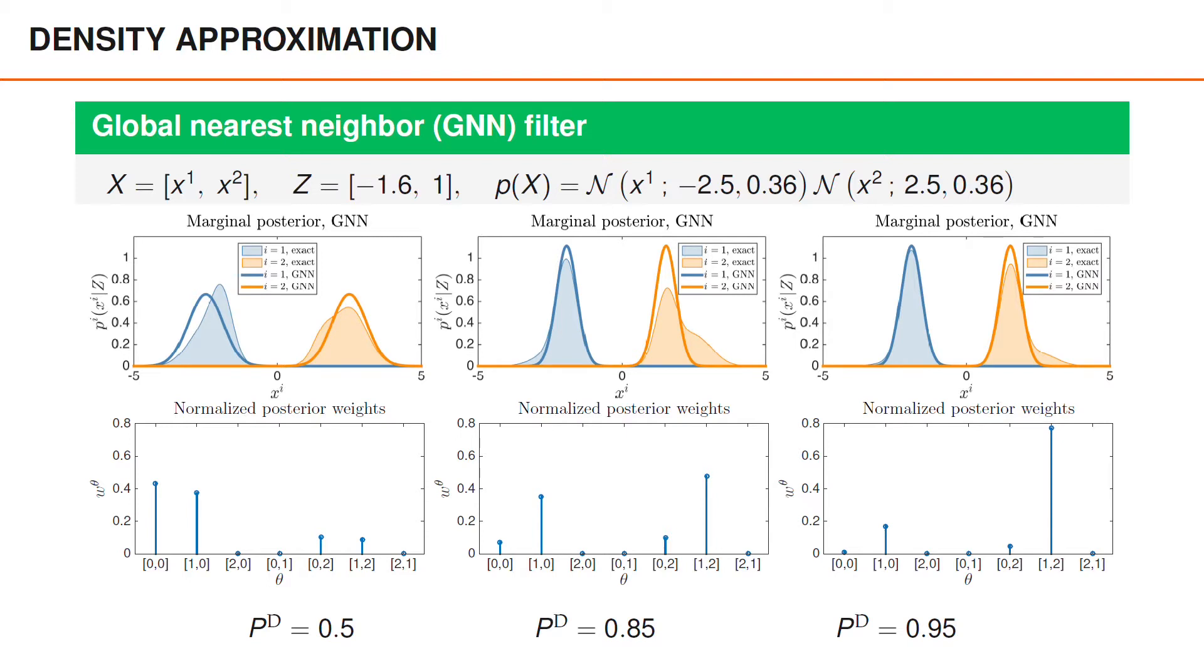When PD is a bit lower, 0.85, which is shown in the middle, the most probable hypothesis is the same as for PD equal to 0.95. However, the probability of this hypothesis is no longer much larger than the second largest one. Subsequently, there is a larger difference between the exact posterior and the GNN approximation.